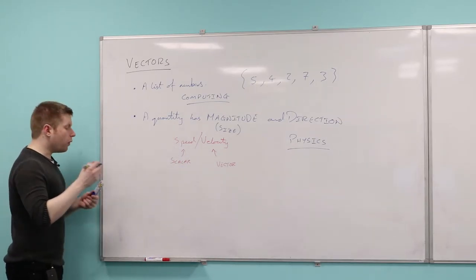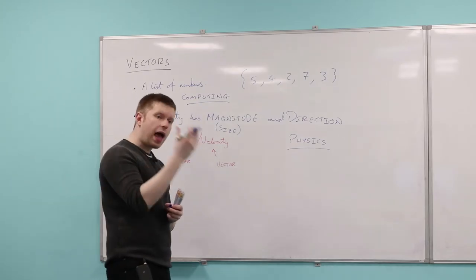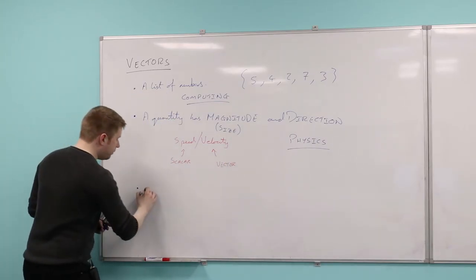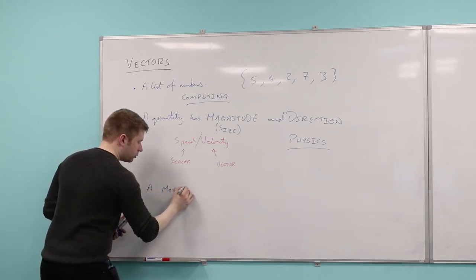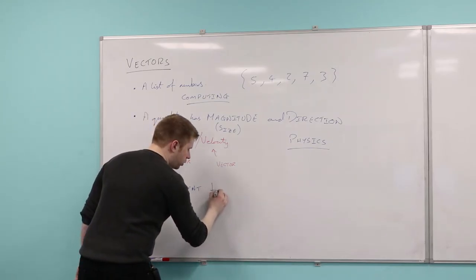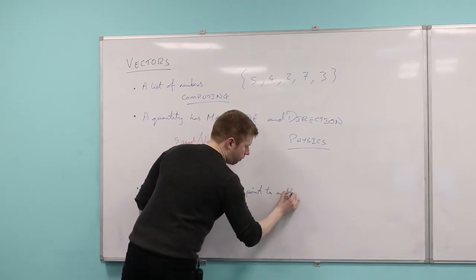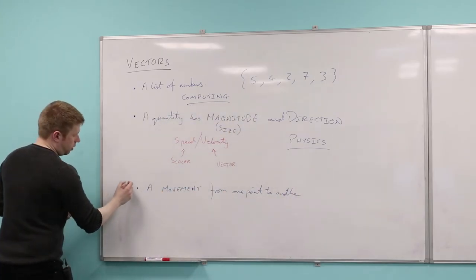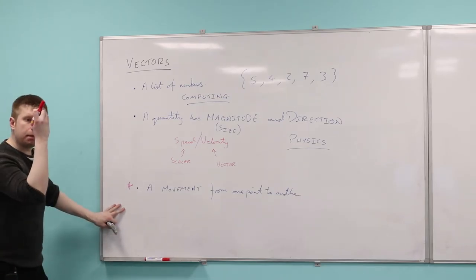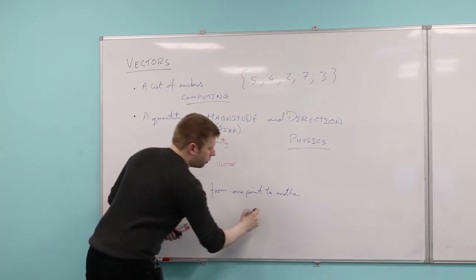But the definition that I really want to focus on is the geometric definition of a vector. So in this course, we focus on the idea of a vector from the idea of geometry — in other words, from shapes, from drawing things. And it is just simply a movement which describes a movement from one point to another. This is the definition I want you to understand. It's just simply a movement from one point to another.